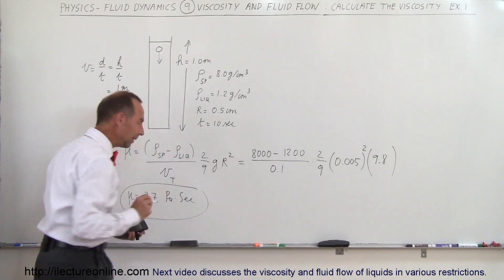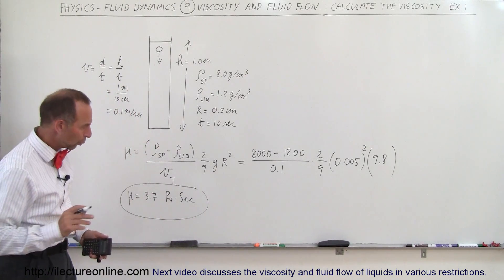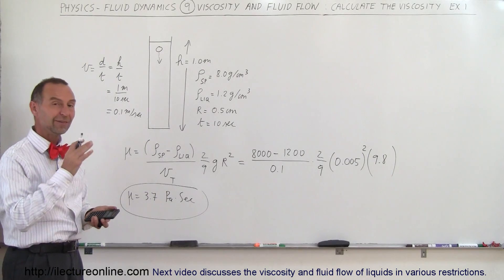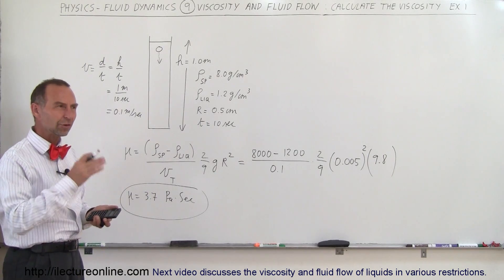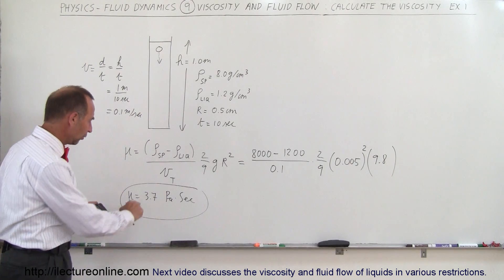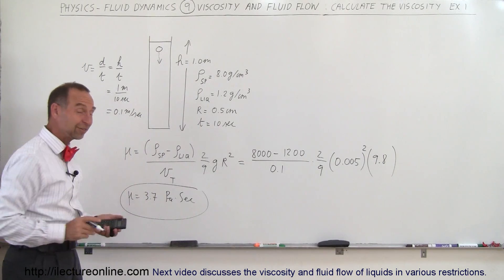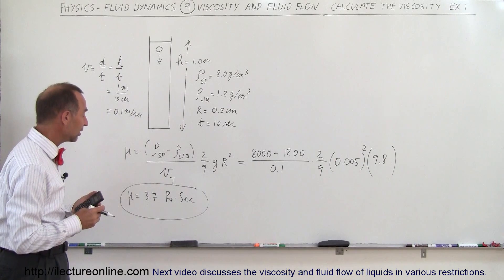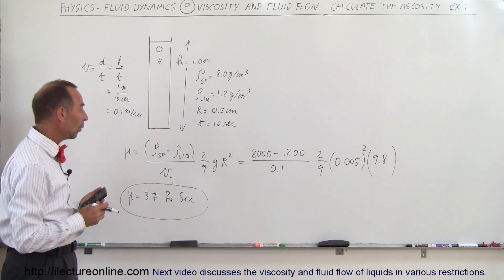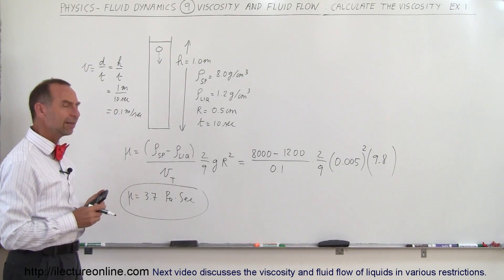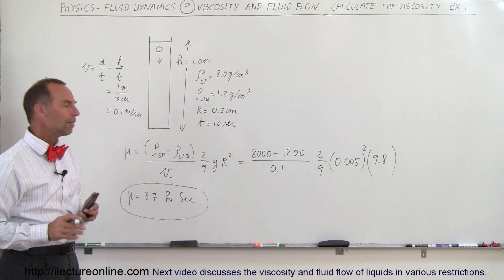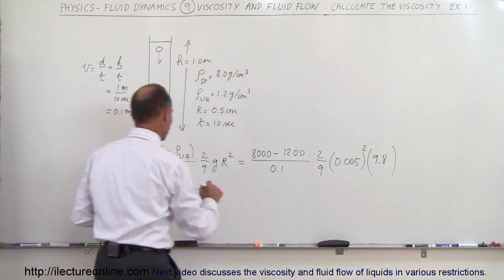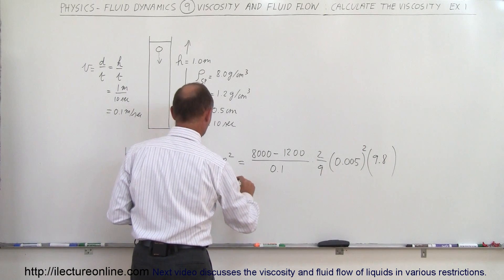How does that compare to water at 20 degrees centigrade? For water it would be 0.001 Pascal-seconds, so this liquid is 3,700 times the viscosity of water. Now let's verify that the units come out correctly.